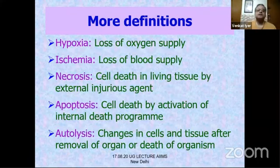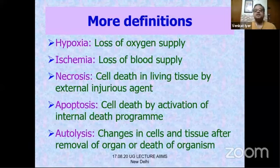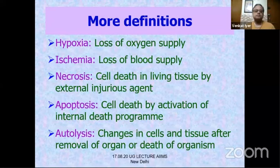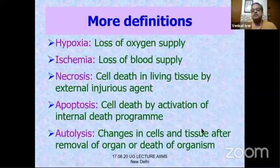Two of the most important terms are hypoxia and ischemia. Hypoxia is the standard model to study cell injury — it means loss of oxygen supply. Ischemia means loss of blood supply; blood contains glucose, washes away carbon dioxide and metabolites, so stopping blood supply stops all of these. Hypoxia means only oxygen is lost. Necrosis is cell death in living tissue due to an injurious agent external to the cell, whereas apoptosis is cell death by activation of an internal death program. Autolysis is changes in cells and tissue after removal of an organ or death of an organism — different from cell injury.